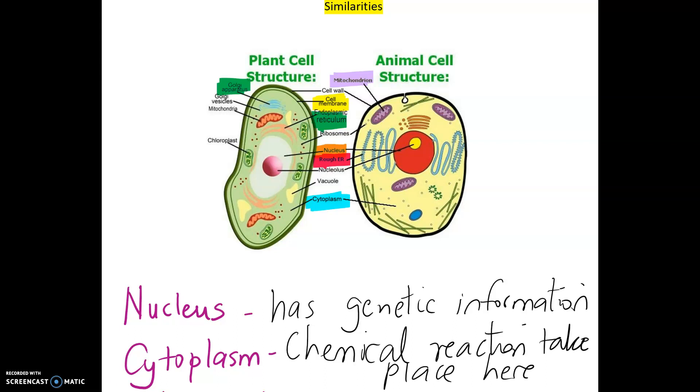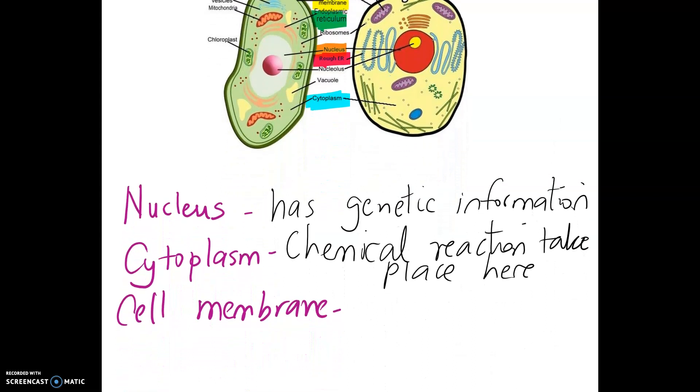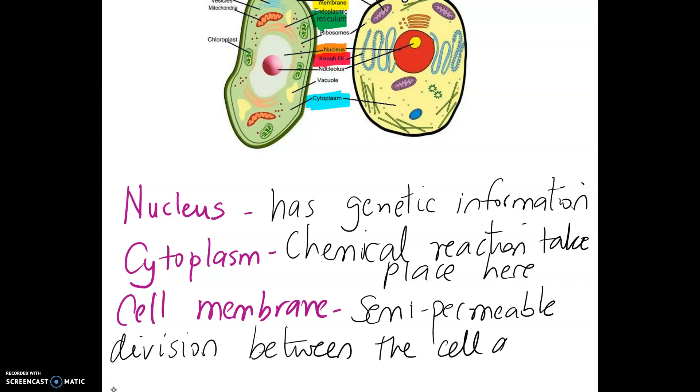The next structure we are going to look at is cell membrane which is highlighted in yellow, which again is something in both cells. So cell membrane has a semi-permeable division between the cell and its surrounding. Semi-permeable means it only allows certain stuff through.